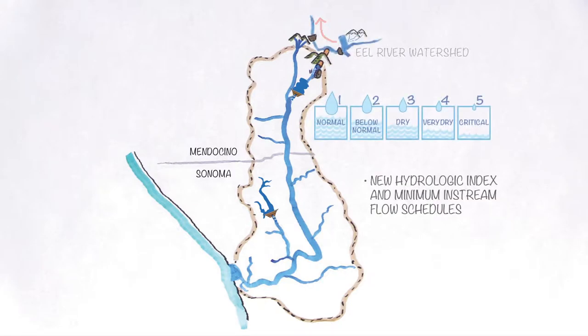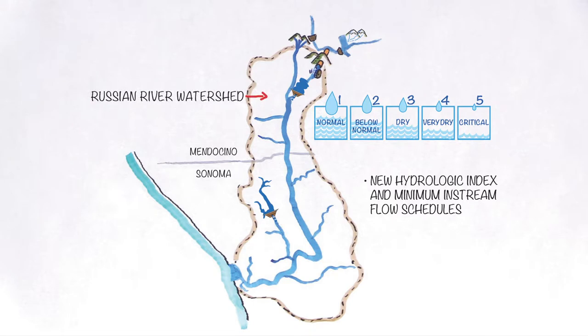The proposed changes to the hydrologic index would allow for monthly monitoring and changes to minimum in-stream schedules to more accurately reflect Russian River watershed and water supply conditions.